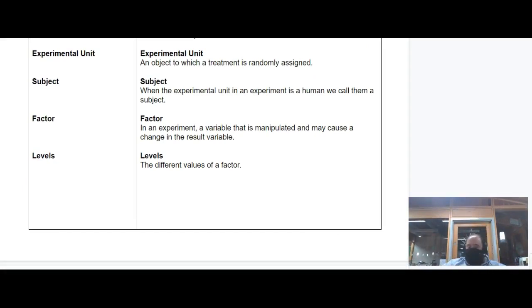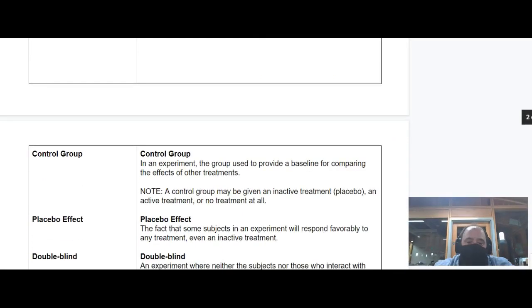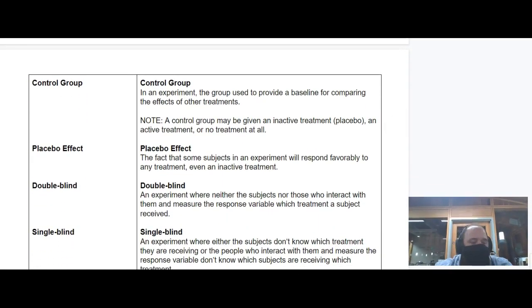A factor is a specific thing that's being manipulated. If you're looking at your treatment, a certain variable that's being manipulated is the factor, and the different values that you change that factor to are called levels. For example, in a drug trial, you might introduce a drug at 5, 10, or 15 milligrams to see what's going on.